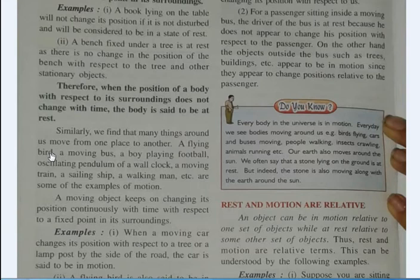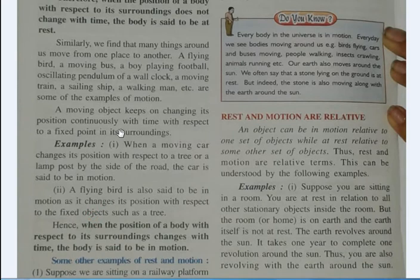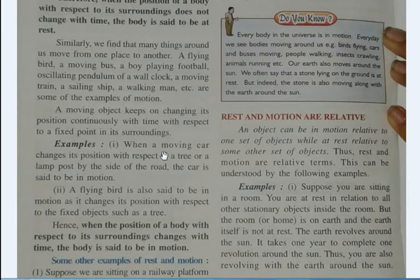We find that many things around us move from one place to another — a flying bird, a moving bus, a boy playing football, an oscillating pendulum of a wall clock, a moving train. These are some examples of motion. A moving object keeps on changing its position continuously with time with respect to a fixed point in the surroundings. Every object has a position, and when that position changes according to time, it is said to be in motion.